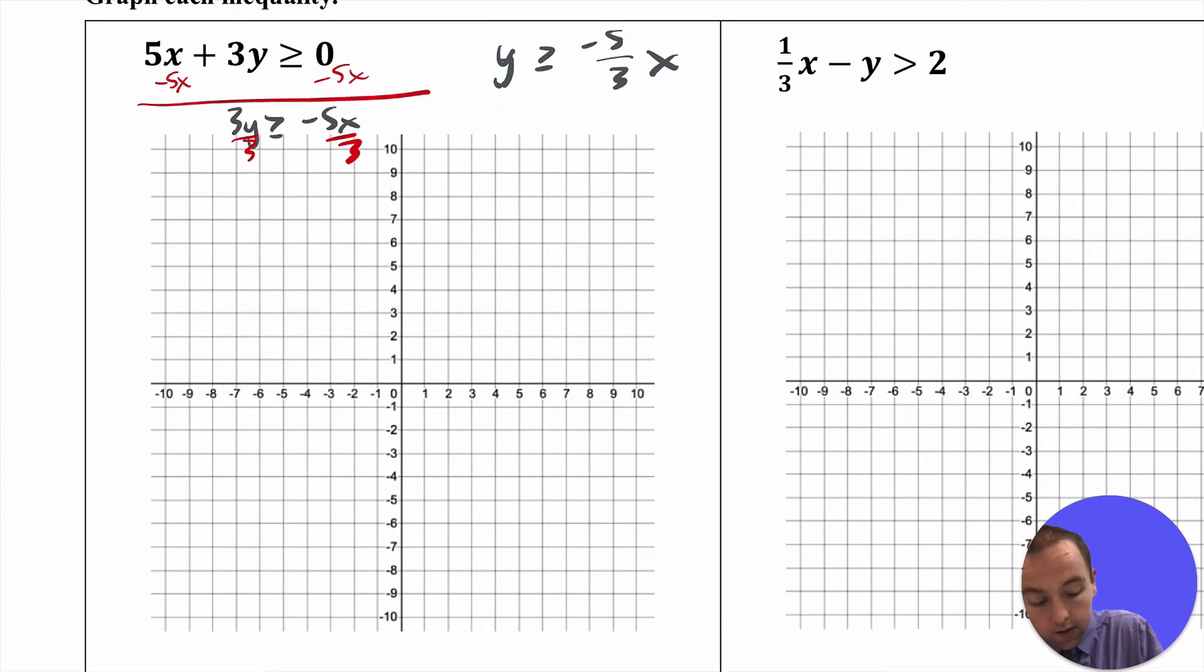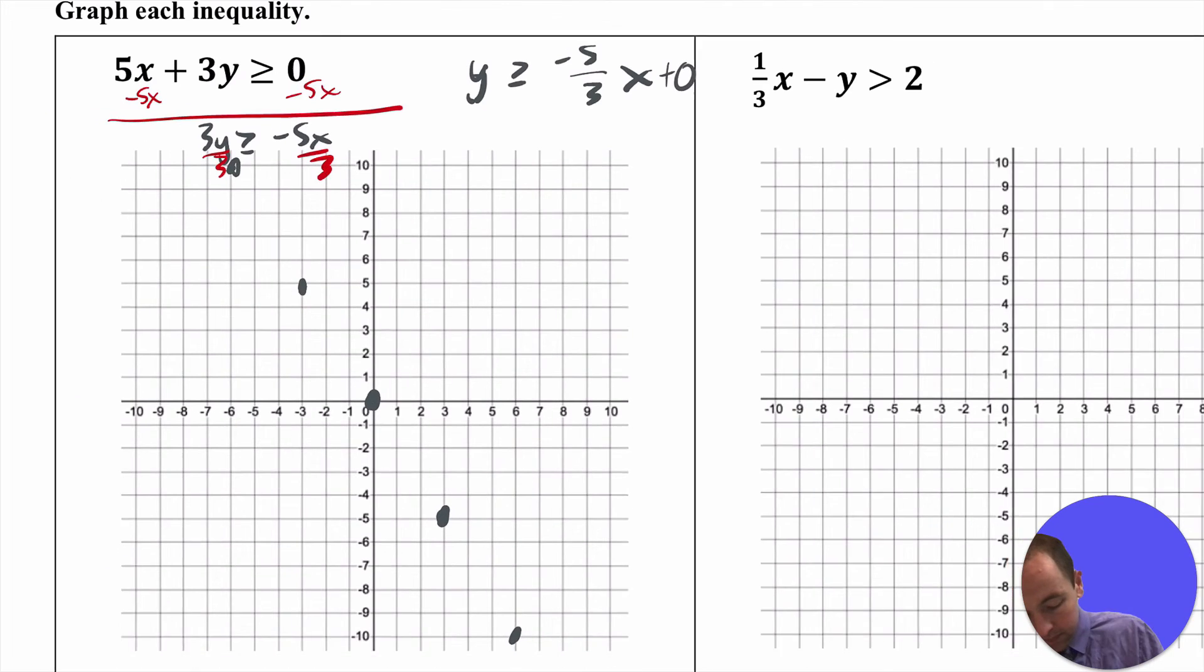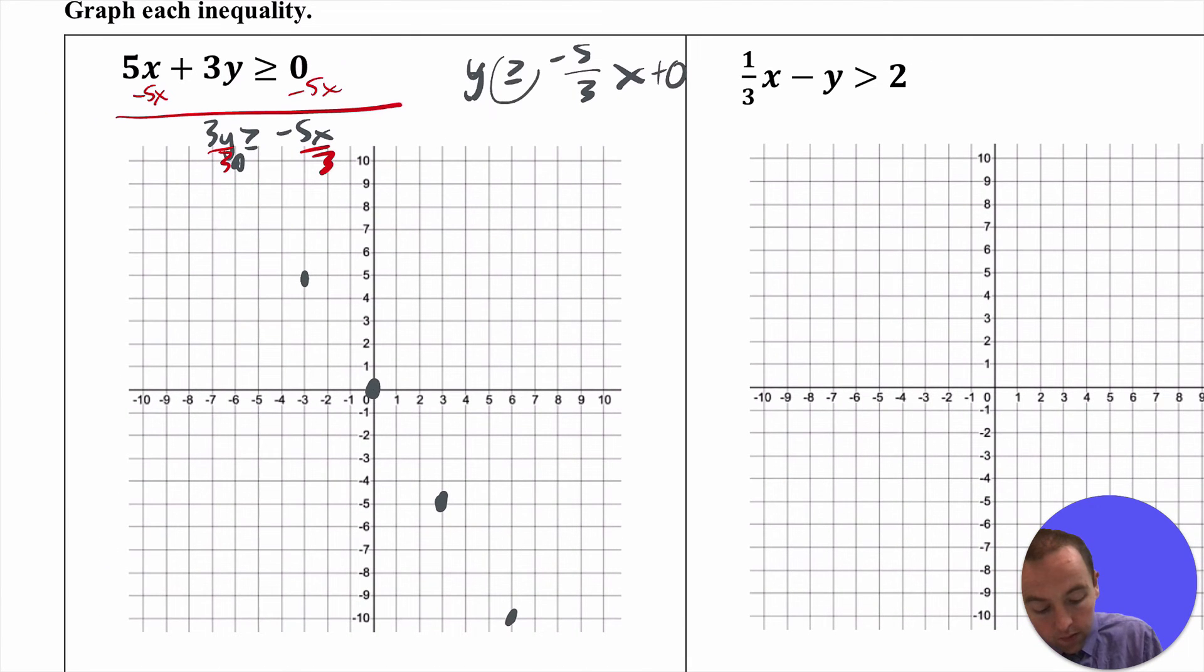So this is just like graphing the line that has a y intercept at 0 and then a slope of negative 5 thirds, which will go like this. Note that because the inequality symbol had an equal to you can make this line solid. And then when the y value is above the negative 5 thirds x, you want to shade above the line. So you have to think, does side 1 or side 2, is that going to be above the line? And it should be pretty clear in this example that above the line is going to be in this region right here.